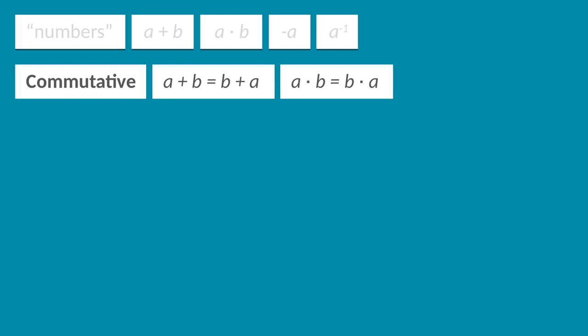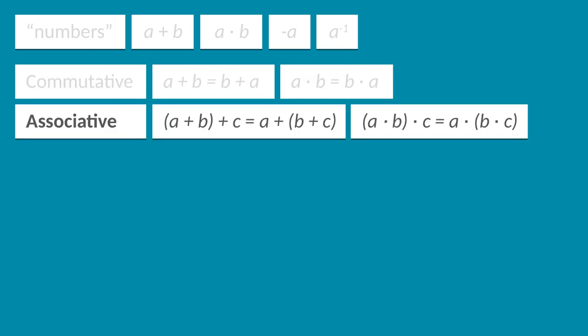We start by introducing two convenient properties. First, we want addition and multiplication to be commutative. That is, it shouldn't matter whether you add a to b or b to a, the resulting number should be the same. Second, we want both operations to be associative. It shouldn't matter whether you first multiply a and b then multiply by c, or whether you first multiply b and c then multiply by a.